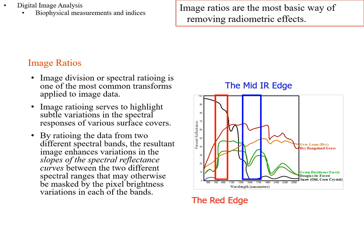The next simplest thing you can do is image ratios — taking one image and dividing it by another. You could have an equation like: index = band one over band two. That means you divide every pixel's value for band one by the same pixel's value for band two, and the result is a new image. This is done very commonly and serves to highlight subtle variations in the spectral responses of surface covers.